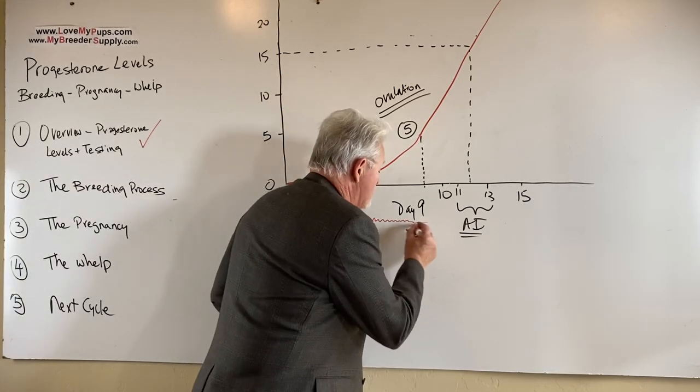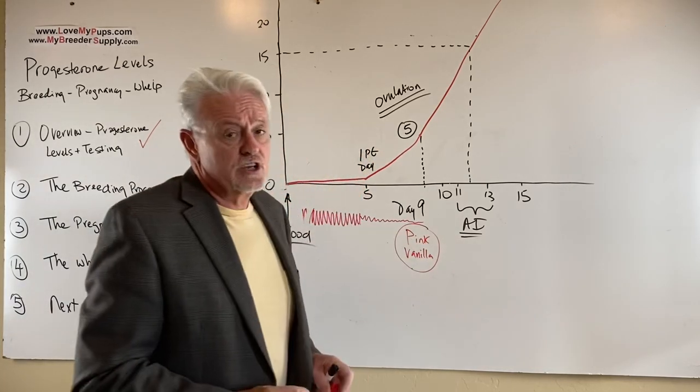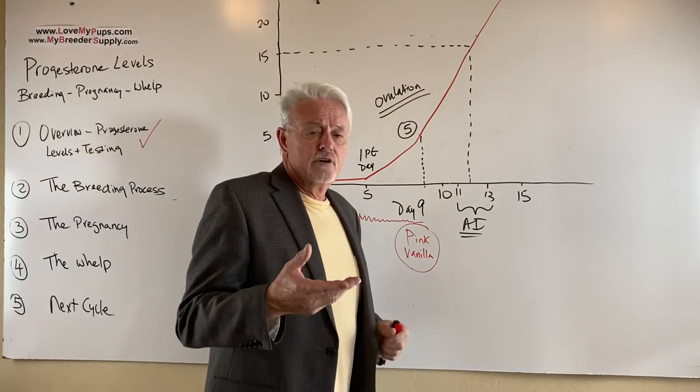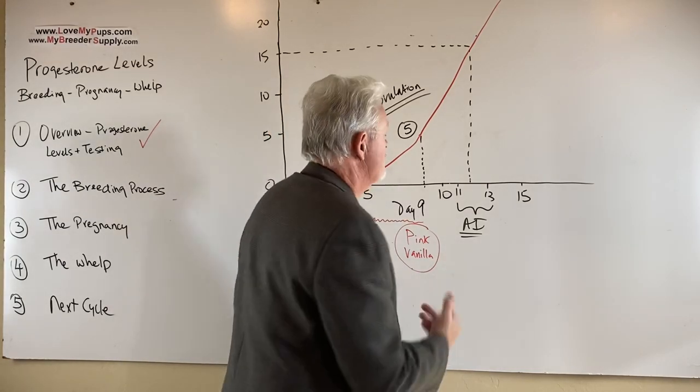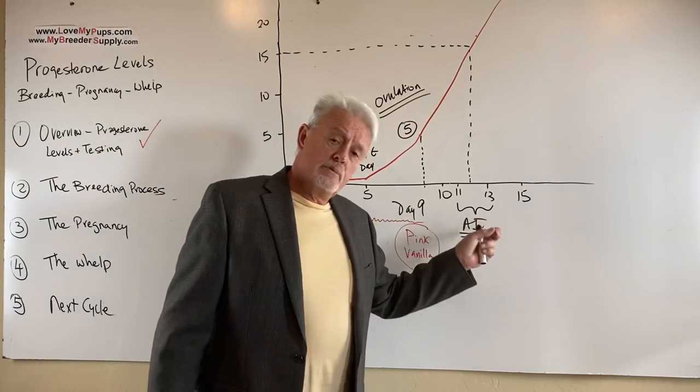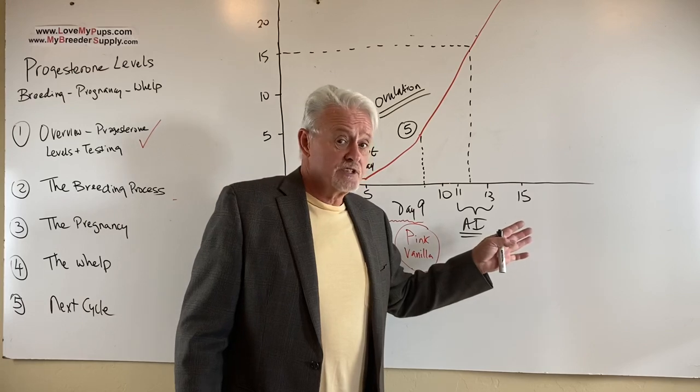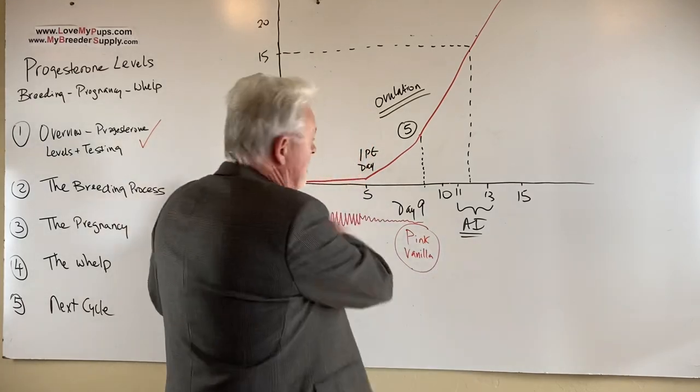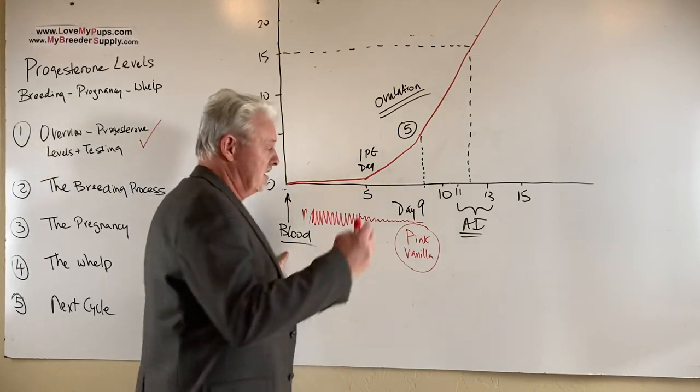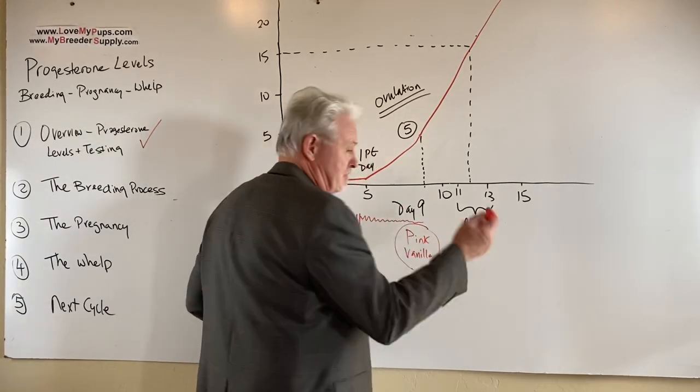And that normally is close to the point the dog's ovulating. Look, if you try to time it strictly off this, you're likely to get it wrong. But the more information you have, the better you are at getting the right time to AI. Now, does every dog get bred between day 11 and 13? Well, it would be really simple if that was the answer because we wouldn't muck around with any of this stuff. We just look for the first signs of blood, set our calendar for day 11 and 13, breed twice and call it done.